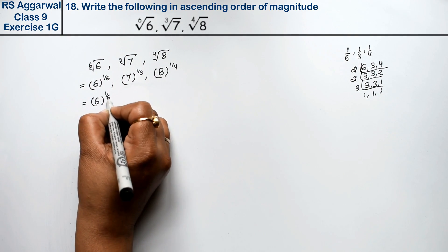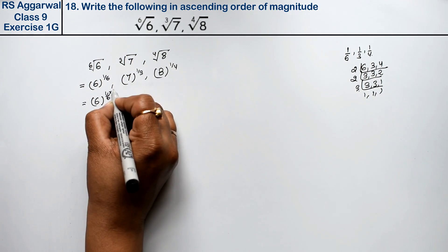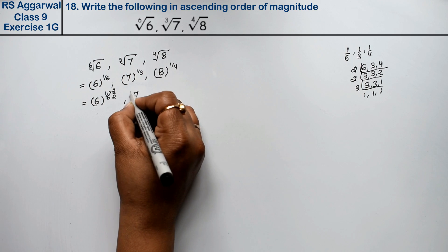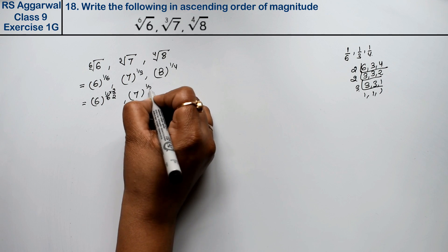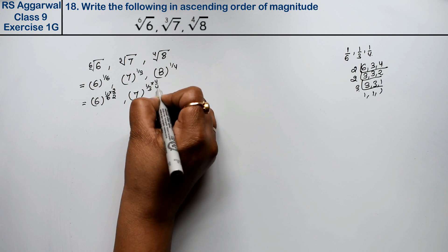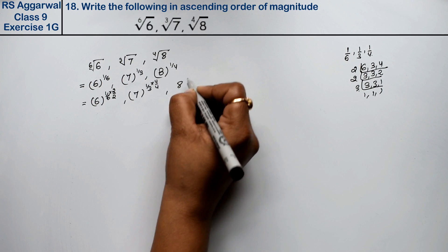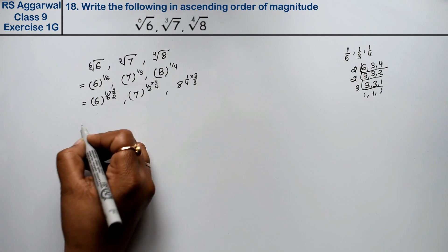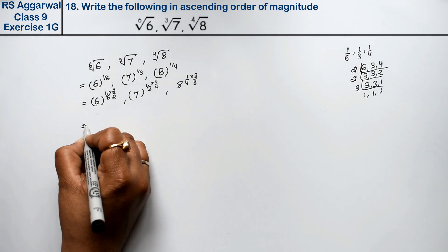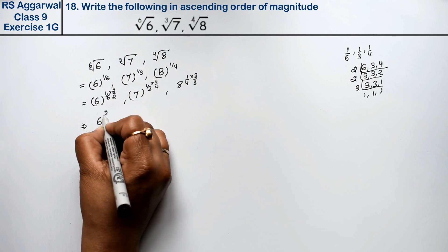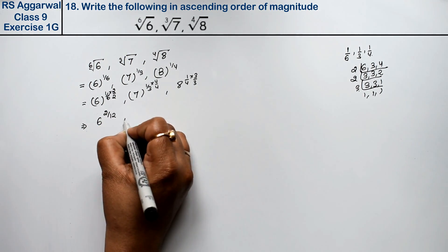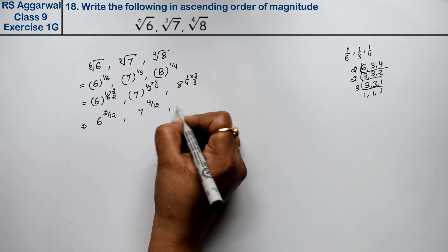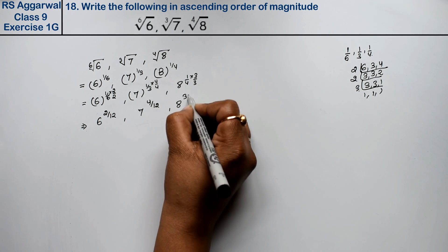So 6^(1/6) — multiply numerator and denominator by 2 — becomes 6^(2/12). Similarly, 7^(1/3) — multiply by 4 — becomes 7^(4/12). And 8^(1/4) — multiply by 3 — becomes 8^(3/12). Now all three have the same power of 1/12 as the base exponent denominator.